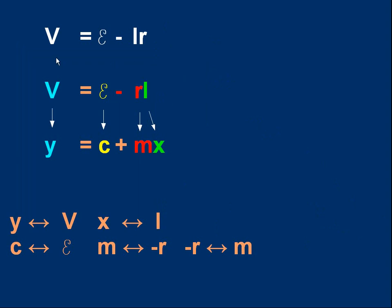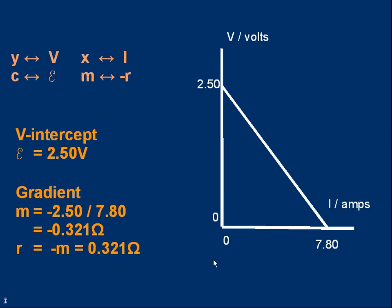Now, go back to the equation we're looking at. V is emf minus ir. Just rearrange that slightly. V is e minus ri. I hope you see now this is y is c plus mx. Y corresponds to the variable v. X corresponds to the variable i. C corresponds to the constant e. And m corresponds to the constant minus r. Y corresponds to v. X to i. C to e. M to minus r. Or we could say minus r corresponds to m.